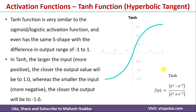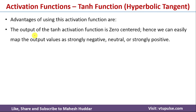The mathematical representation of the tanh function is f(x) = (e^x − e^(−x)) / (e^x + e^(−x)), where x is the weighted sum of the neuron. One advantage of the tanh activation function is that its output is zero-centered, so we can easily map output values as strongly negative, neutral, or strongly positive. If the output is −1 it is strongly negative, if it is +1 it is strongly positive, and if it is 0 it is a neutral value.